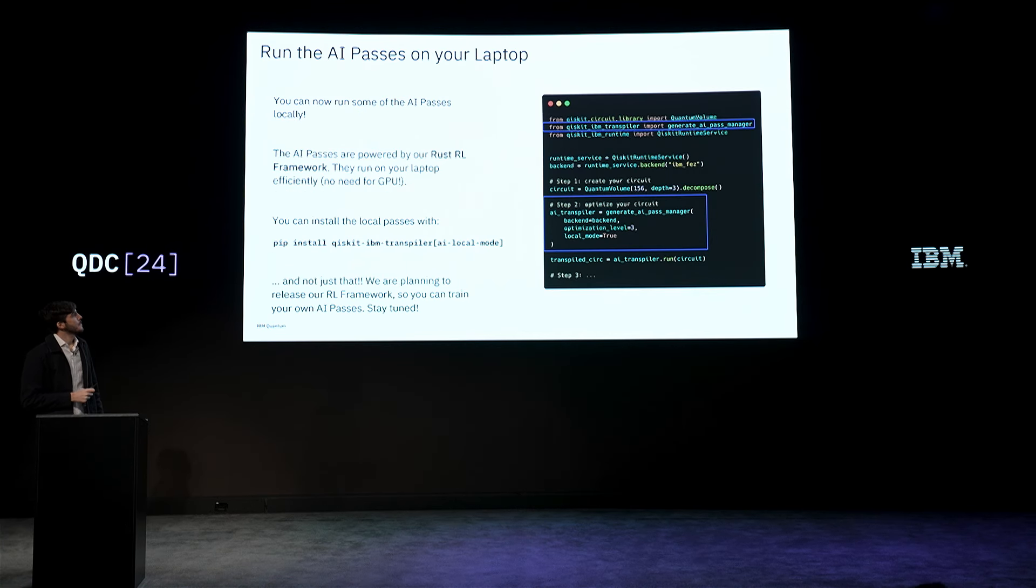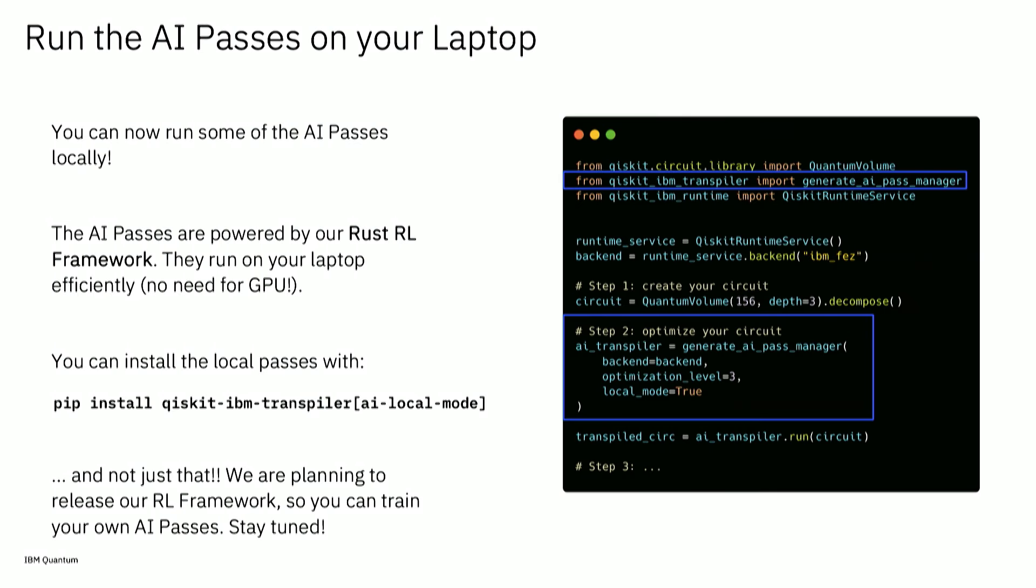Finally, we are releasing a version of these AI passes for you to run locally on your laptop. These AI models are pretty small, on the order of kilobytes to a few megabytes. This can be run pretty efficiently on your laptops. We spent quite part of this year optimizing this and building a Rust reinforcement learning framework where you can run these passes locally. You can install this local mode like this and try it. We just released it yesterday. And not just that, we are planning to also release this reinforcement learning framework where you can actually train your own passes. This is not out yet, but stay tuned for this. Hopefully you can play with your own passes.